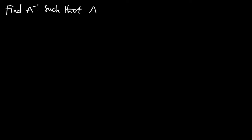In this episode, we are going to solve example 2 on the inverse of a matrix. The question: find the inverse of A, where matrix A is given by the elements 1, 2, 2, 1, 2, negative 1, negative 1, 1, and 4. This is our matrix and we have to find the inverse.